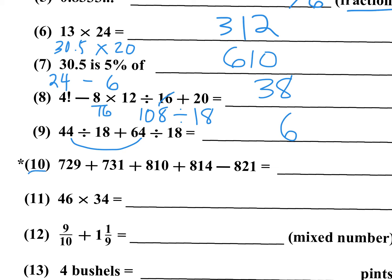Number 10 is a star problem, which is an approximation. So 814 minus 821 will cancel out because they're pretty close to each other. All I have to do is add 29 plus 31: 60 plus 10 is 70. Then add the hundreds: 700 plus 700 is 1,400, plus 800 is 2,200. You get a plus or minus 5% range on number 10, and that is well within the range.